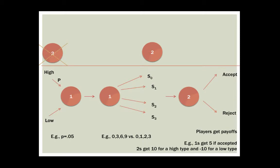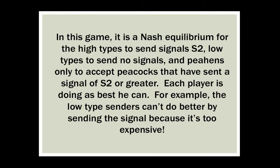The high-type or fit peacock has an easier time sending a costly signal, and as a result has a positive payoff when he matches. An unfit peacock would not put energy into the growth of his tail, as the cost of doing so outweighs the benefit of matching. This is a Nash equilibrium in game theory: high-types send signal S2, low-types send no signal at all, and peahens only accept peacocks that have sent a signal of S2 or greater. Each player is doing as best as he can — the low-type senders can't do better by sending the signal because it's just too costly for them.